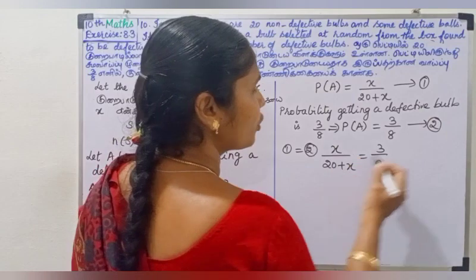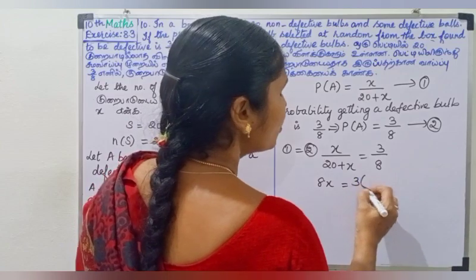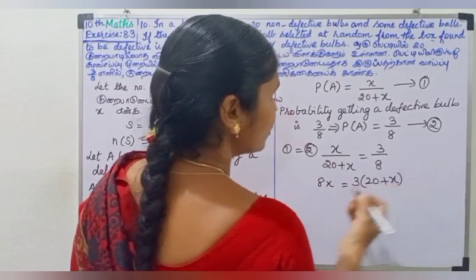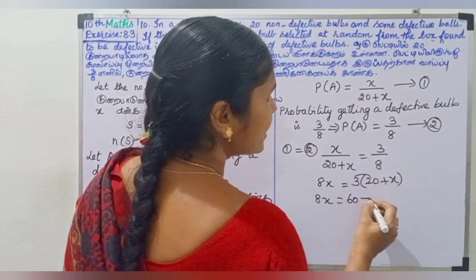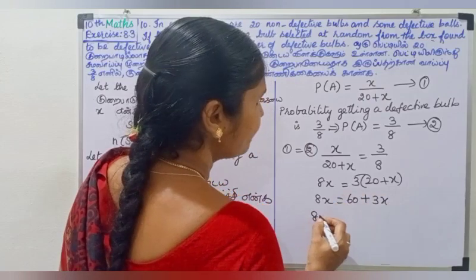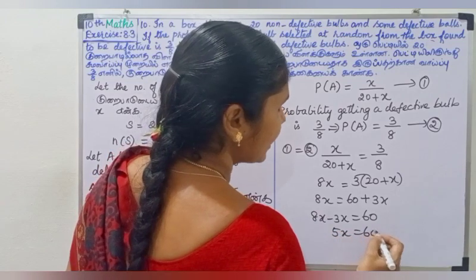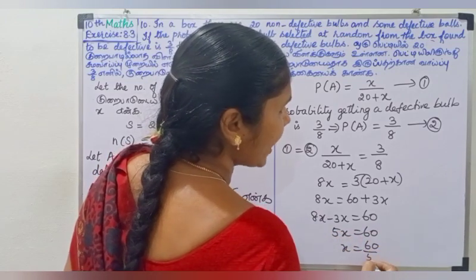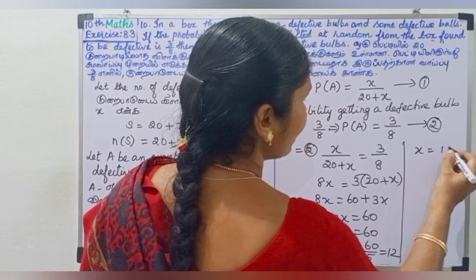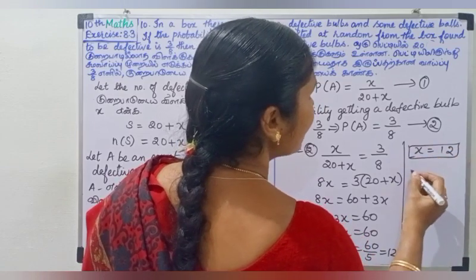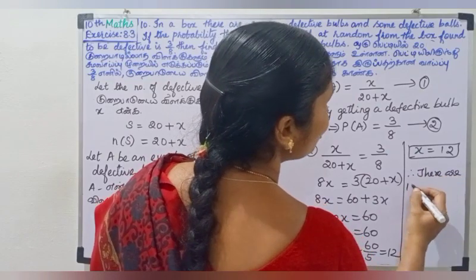So x by 20 plus x equals 3 by 8. We will solve for x. Cross-multiplying, we get 8x equals 3 times 20 plus x, which gives 60 by 5, so x equals 12. Therefore, there are 12 defective balls.